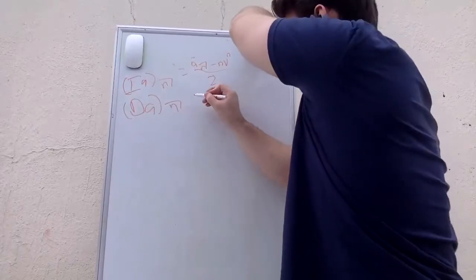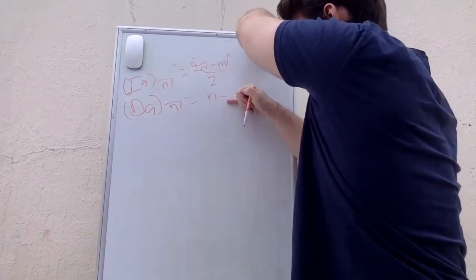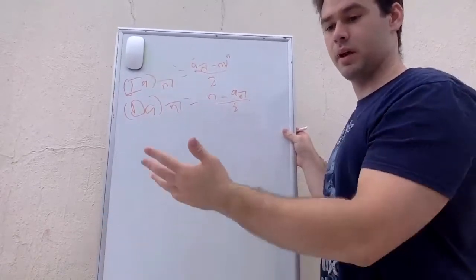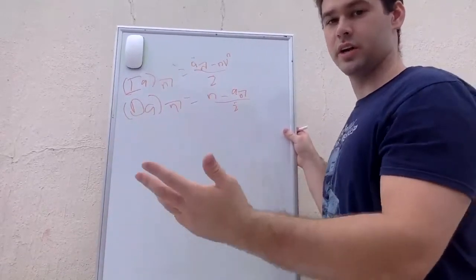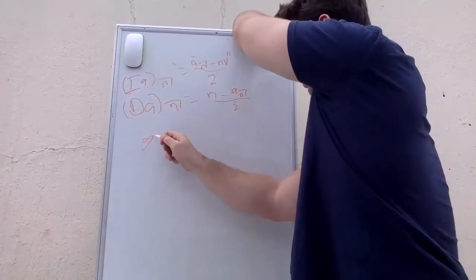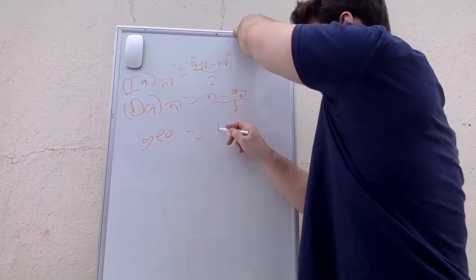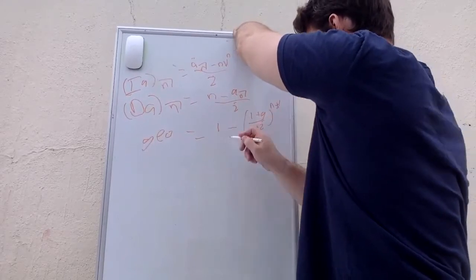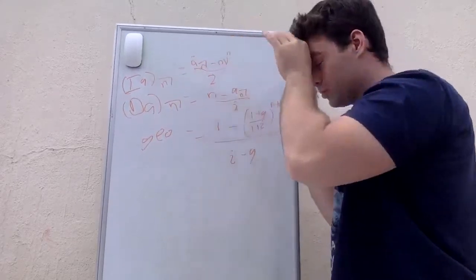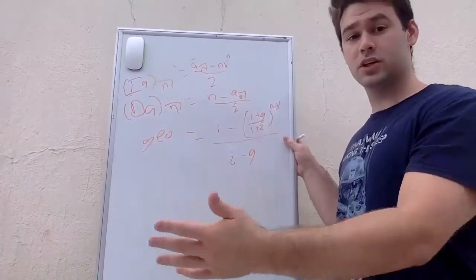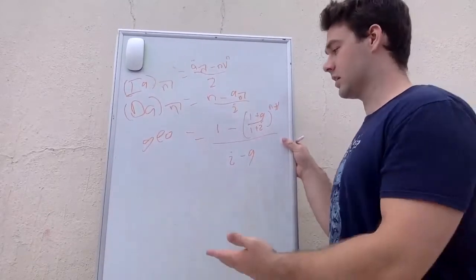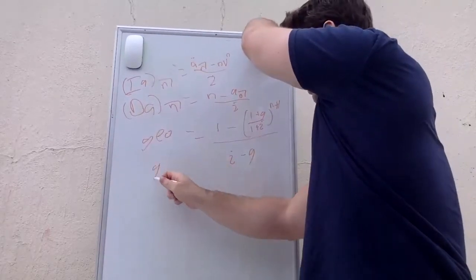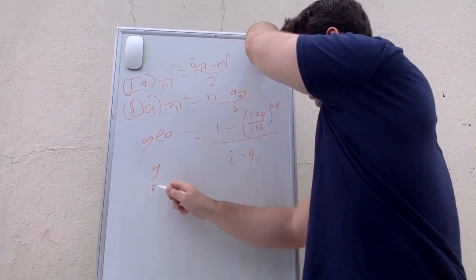The decreasing annuity (Da)-angle-n equals (n − a-angle-n) / i. For a geometrically increasing annuity, where each payment increases by a percentage, the formula is: (1 − ((1 + g)/(1 + i))^n) / (i − g). This is the annuity immediate formula. If you want the annuity due version, multiply by v or divide by the interest rate factor, and g is the rate by which payments increase each period.